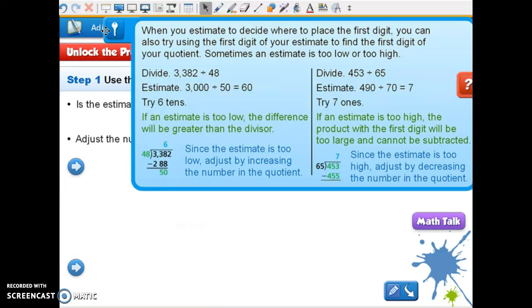If an estimate is too high, the product with the first digit will be too large and cannot be subtracted. When we multiply 65 times 7 we get 455, and that's too large. So on this one we would have to back it down to 6.